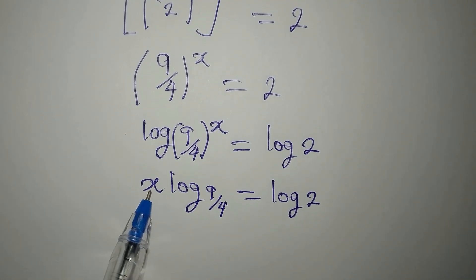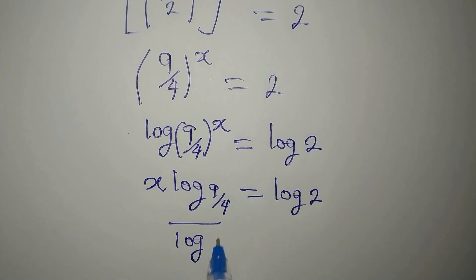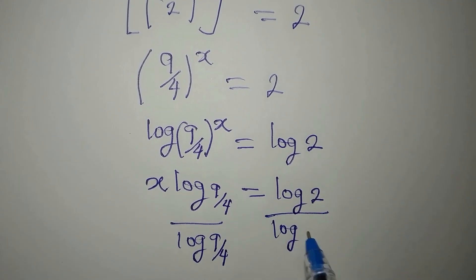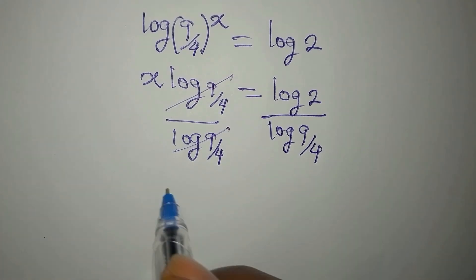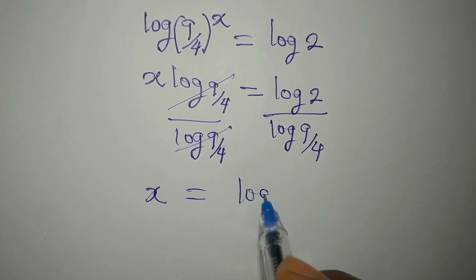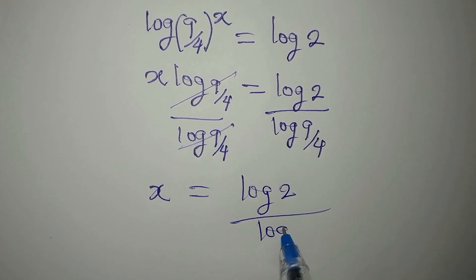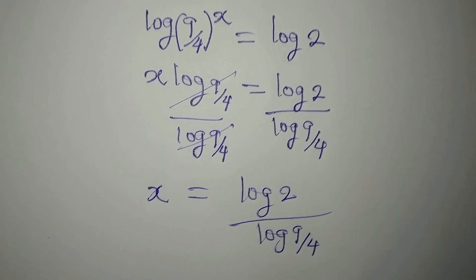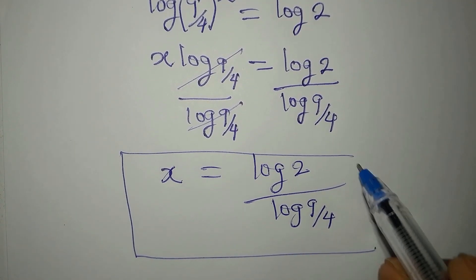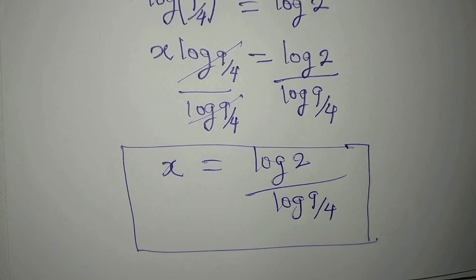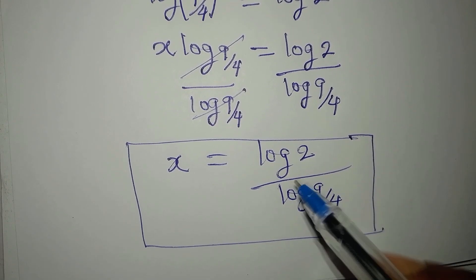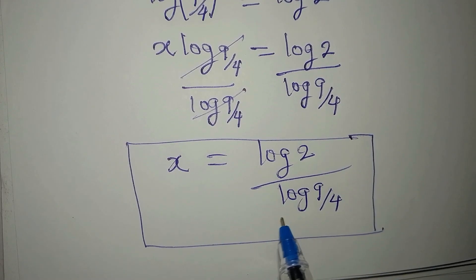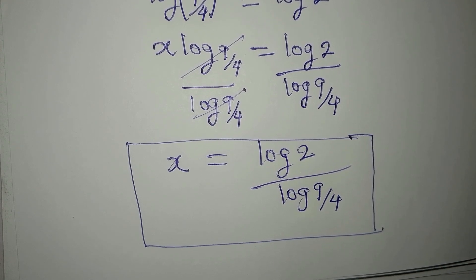Since we are making x the subject, we divide both sides by log 9 over 4. This gives us x equals log 2 divided by log 9 over 4. This is the value of x that satisfies the given equation. You can use a calculator to get the decimal values of log 2 and log 9 over 4. Thank you for watching.